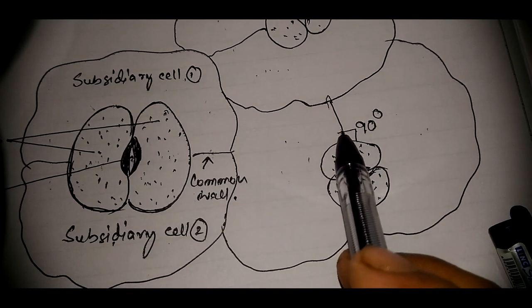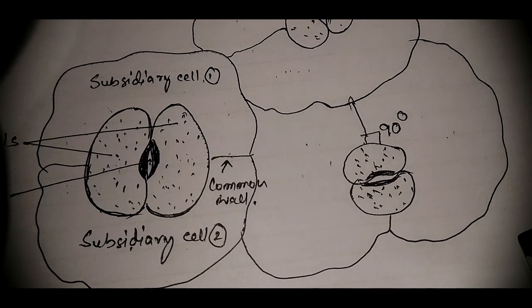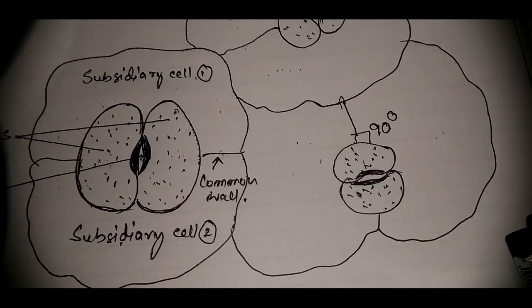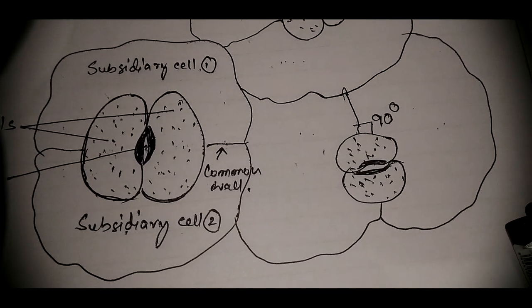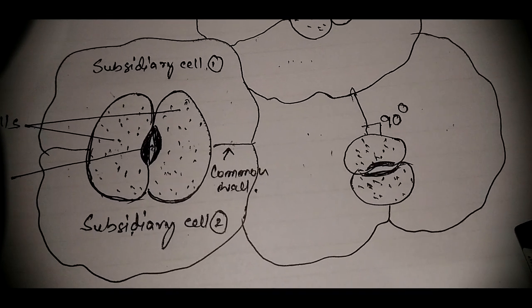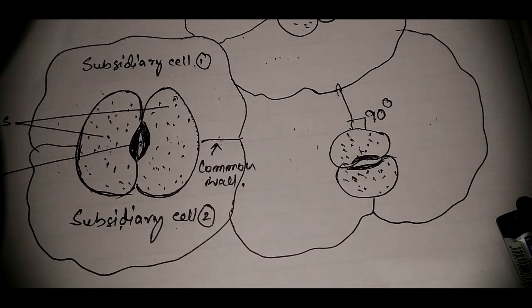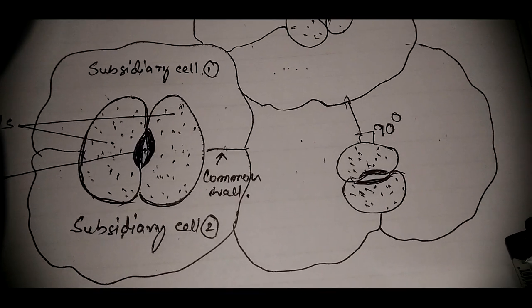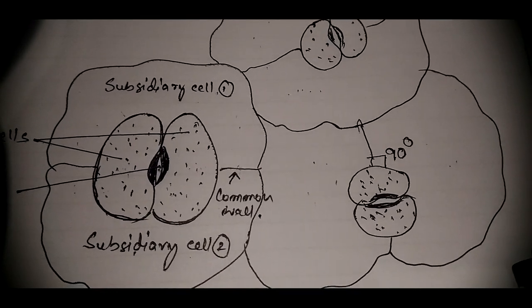Such kind of stomata are termed as diacytic or caryophyllaceous or cross-walled type. In 11 families such stomata are observed, and Acanthaceae and Caryophyllaceae are two of them.